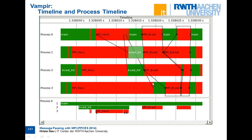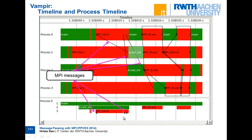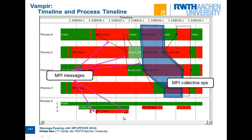You can also see collective operations like broadcast. Collective operations are shown as closed polygons. For example, this one is a broadcast and this one is a barrier. In the process timeline, messages that have been sent appear as small arrows, indicating a message is being sent at that point — so even if it's too small to display the MPI send label, the arrow still indicates a message is being sent. These are MPI messages, and these are collective operations.